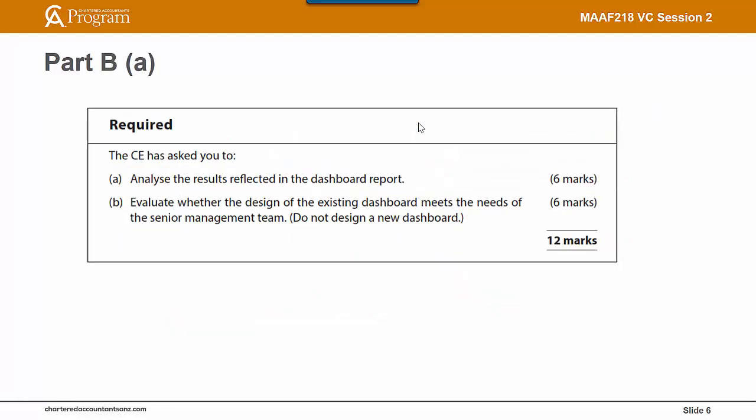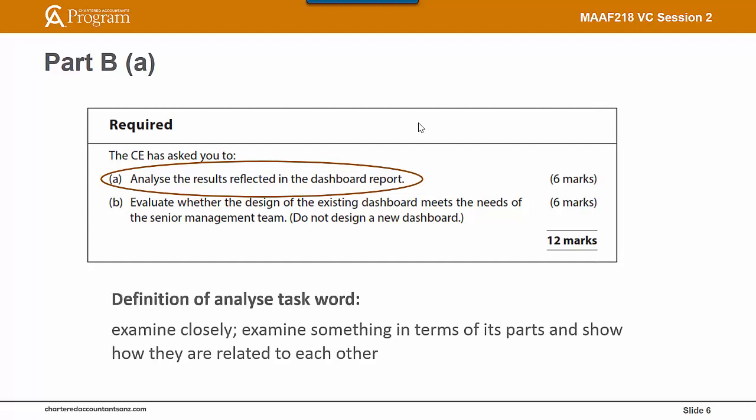Now looking at Part B, little a — the requirement is to analyse the results reflected in the dashboard report provided in the question. Let's first look at the definition of the task word 'analyse': to examine something in terms of its parts and show how they are related to each other. So we're looking for linkages and underlying causes of the financial results reflected in the dashboard.